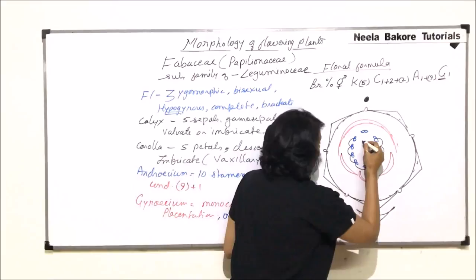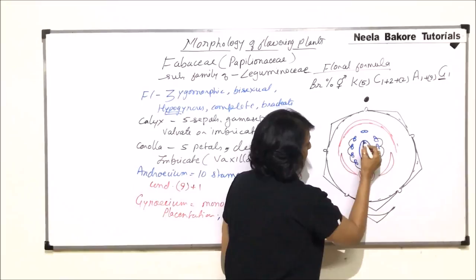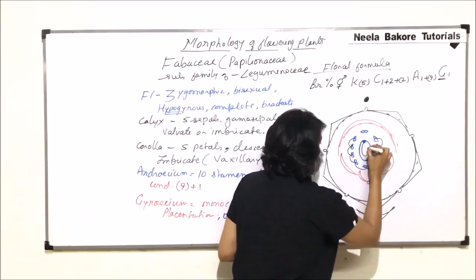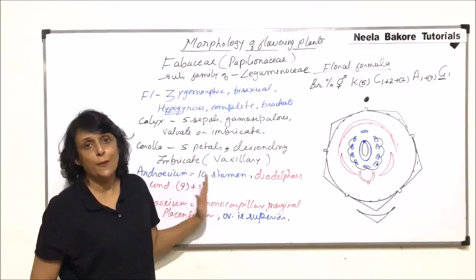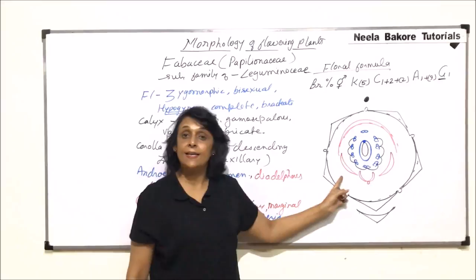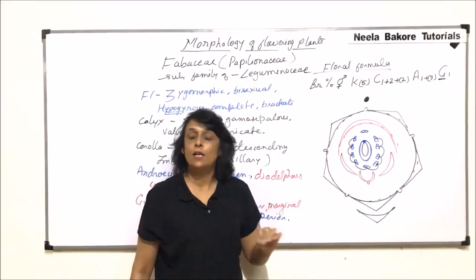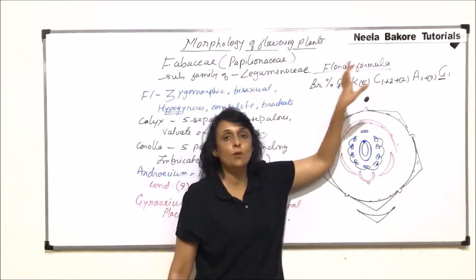Coming to the innermost, that is the pistil. It is unilocular. The placenta is on the margin and attached to the margin is the ovule. So this is the floral diagram of this Fabaceae family. The characteristic features are two. One is vexillary aestivation of the petals and this diadelphous condition of stamens.